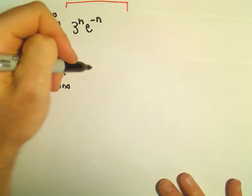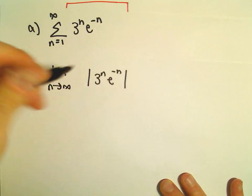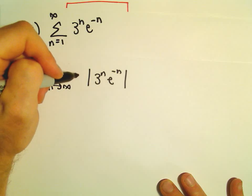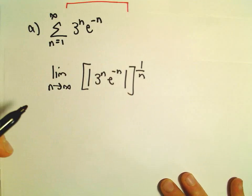So, we'll take the limit as n goes to infinity. We can take the absolute value of this. Again, we're going to take the nth root. But taking the nth root is equivalent to raising it to the 1 over n power.